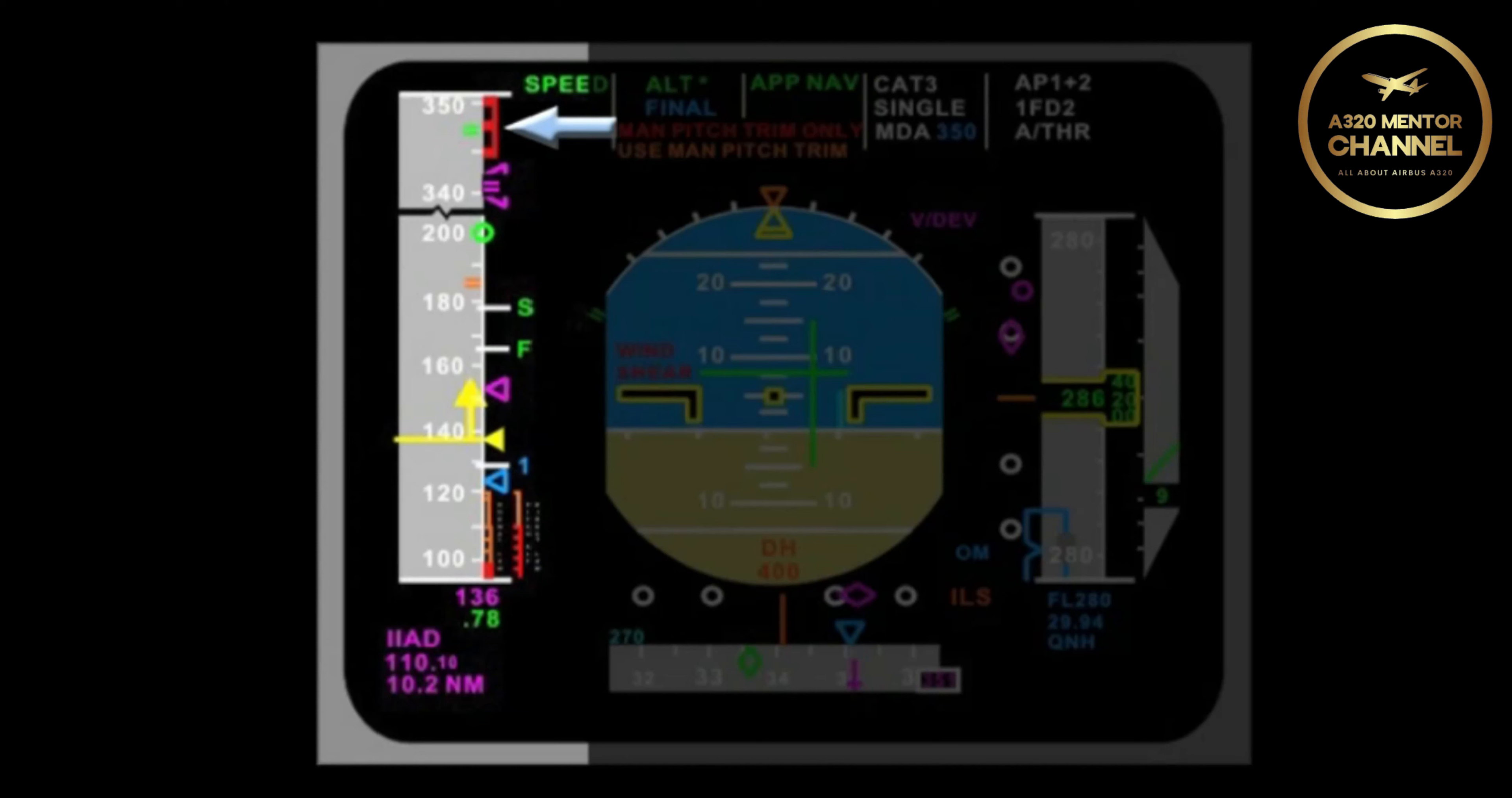At the top of the speed tape is a red and black barber pole. What do we call this? That is VMAX. What does VMAX represent? VMAX is based on VMO, MMO, VLE, or VFE, whichever is lower.